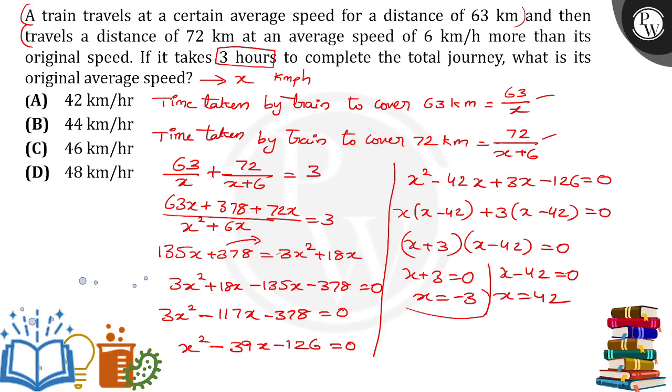The negative value is not considered to represent speed. Therefore, 42 is the right answer. The average speed of the train is 42 km per hour. Thank you.